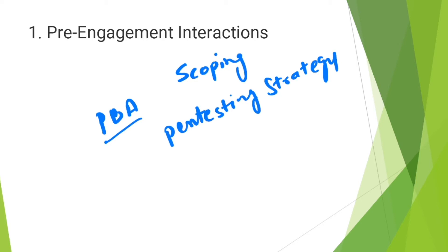Based on the organization culture and PBA, the pen tester can then determine the type of pen test to use — it could be white box, black box, or gray box pen testing. At this stage, planning will occur and goals will be aligned for the specific pen testing outcomes.